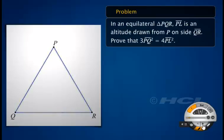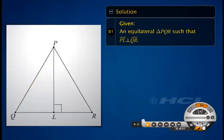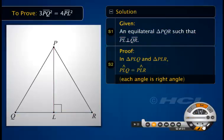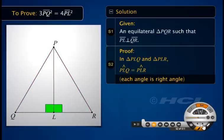PQR is an equilateral triangle such that PL is an altitude drawn from point P on side QR. Prove that thrice the square of PQ is equal to 4 times the square of the altitude PL. An equilateral triangle PQR is given such that PL is perpendicular to side QR.